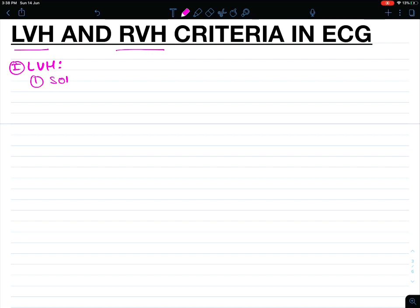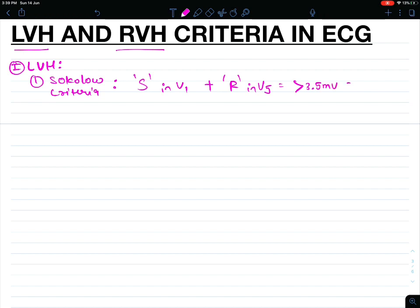The first criteria is Sokolov criteria. In Sokolov criteria we will see S wave in V1 and add it to R wave in V5. If it is more than 3.5 mV or more than 35 small boxes, it is said to be left ventricular hypertrophy. I will first tell the criteria and then show how to do it practically.